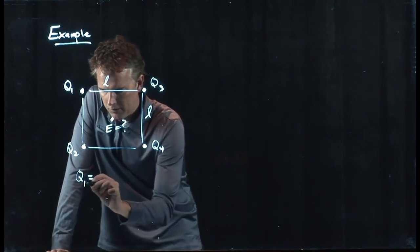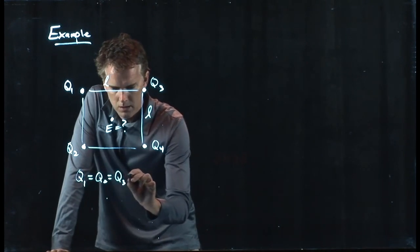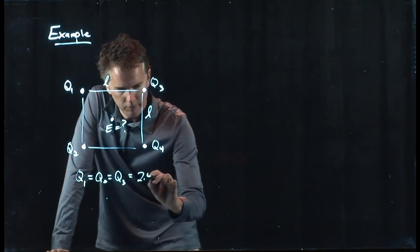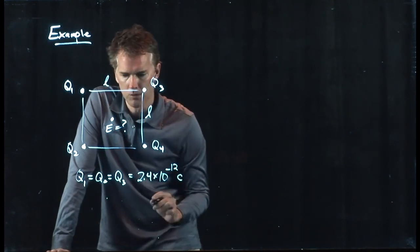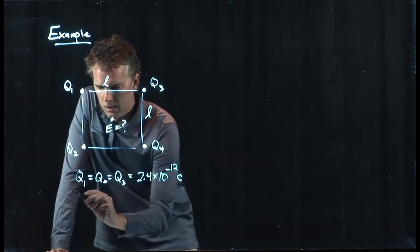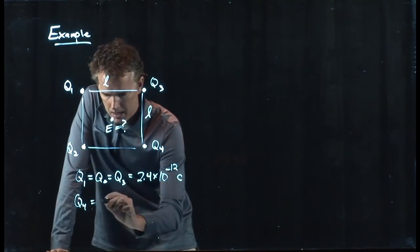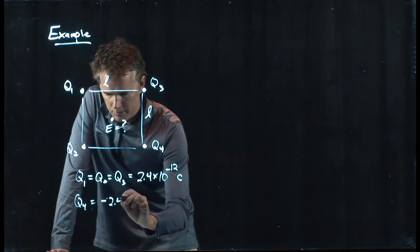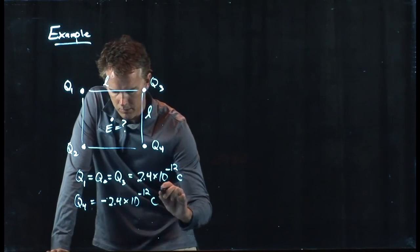q1 is going to be the same as q2 and q3, which is 2.4 times 10 to the minus 12 coulombs. q4 is going to be negative 2.4 times 10 to the minus 12 coulombs.